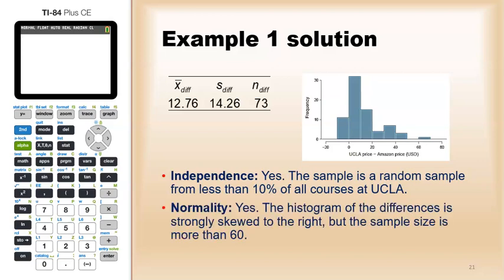As for normality, the histogram is definitely skewed, but the sample size is more than 60. Recall that the larger the sample size, the less you care about skewness. In this case, when your sample size is at least 60, you can get by with a lot of skewness, and that's the case here.